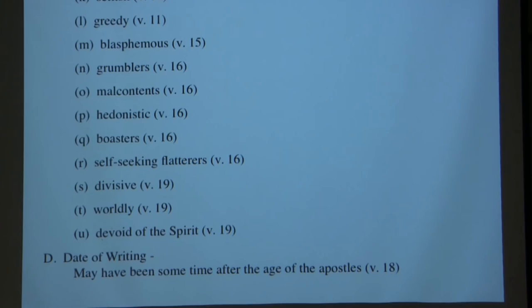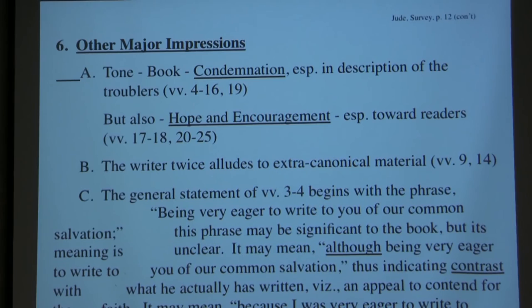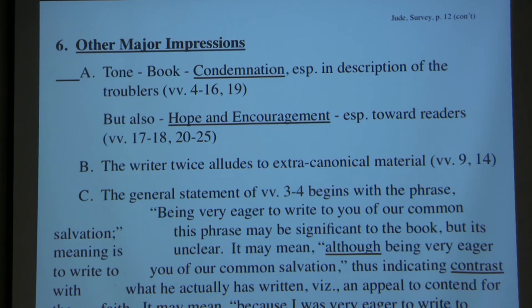With regard to other major impressions: the tone of the book is one of condemnation, especially in the description of the ungodly, but also a tone of hope and encouragement especially toward the readers. We note the writer twice alludes to extra-canonical material, presumably from the Assumption of Moses and from 1 Enoch. We note that the general statement of verses 3 and 4 begins with the phrase 'being very eager to write to you of our common salvation' — this phrase may be significant to the book, but its meaning is actually unclear.